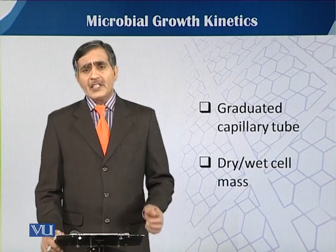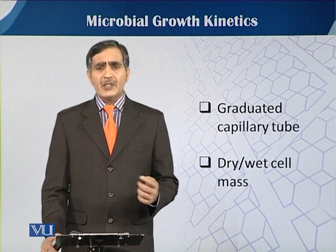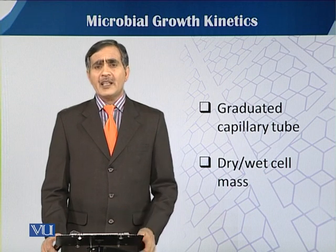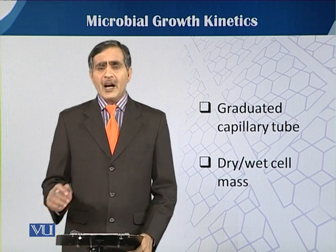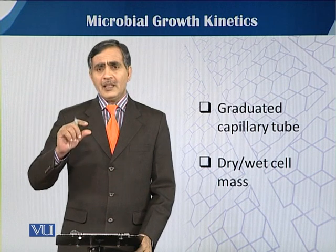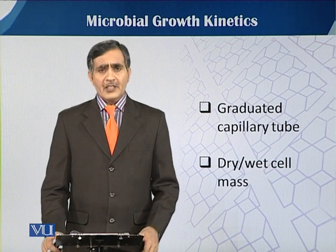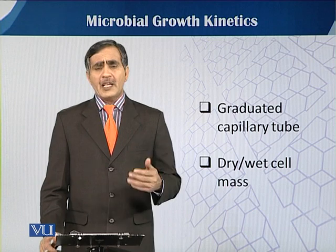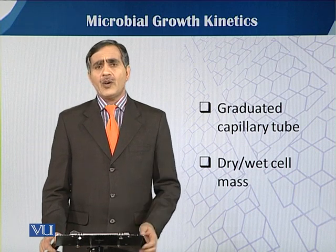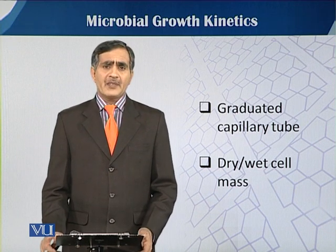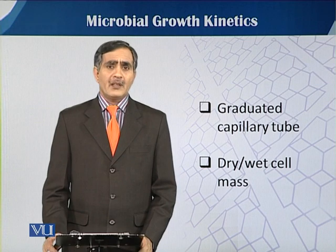The fifth and sixth methods are the graduated capillary tube and dry or wet cell mass estimation. The graduated capillary tube is mostly used for yeast culture — we centrifuge the culture in a graduated capillary tube, and after centrifugation we estimate the height of the pellet to estimate growth. Similarly, for dry and wet mass estimation, we centrifuge and weigh the pellet as wet mass, or dry it in an oven to estimate dry cell weight. By these six different methods, we can estimate growth in any fermentation vessel.